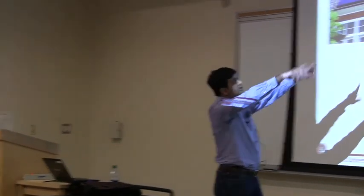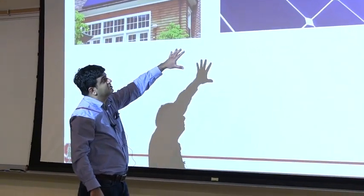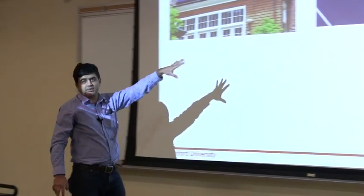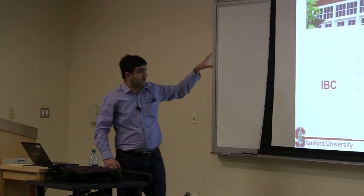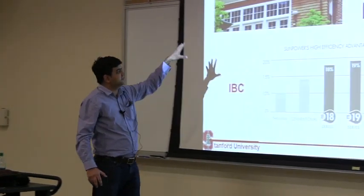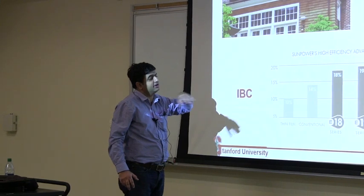All the contacts are on the back. That's the interdigitated back cell. The only company which sells these kind of cells is SunPower. They invented it over here and then commercialized it.